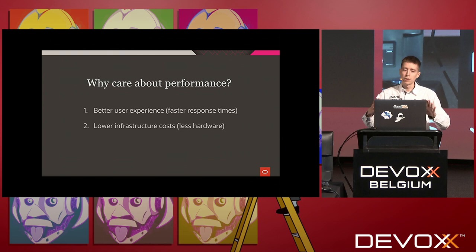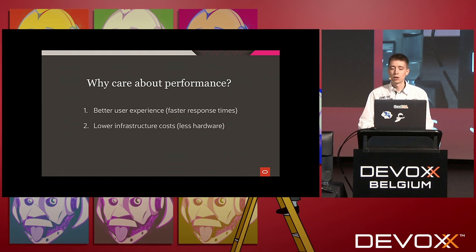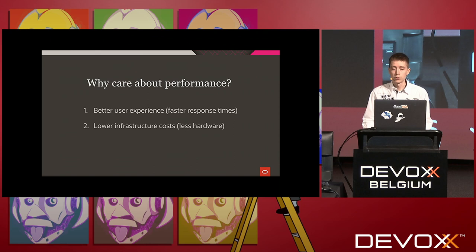Specifically in cloud environments, lower infrastructure costs means using fewer CPU cycles, which directly translates to dollars. If you're paying for Amazon Lambda, you're usually paying based on the size of the instance you occupy — fit the same problem in half the memory and you have half the cost. Additionally, the carbon footprint of data centers is becoming larger globally, so reducing the environmental footprint of your computations is also worth thinking about.